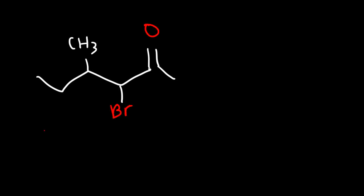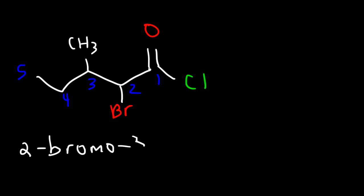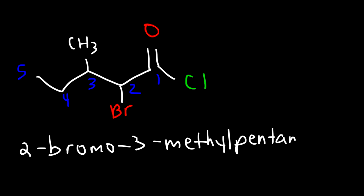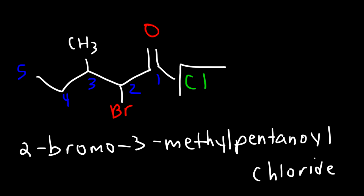This time we're going to have a methyl group, a bromine atom, and a chlorine atom. The carbons are numbered 1 through 5. We need to put substituents in alphabetical order, so bromo comes before methyl — therefore it's going to be 2-bromo and then 3-methyl. We have a five-carbon chain, so this is pentanoyl chloride: 2-bromo-3-methylpentanoyl chloride.